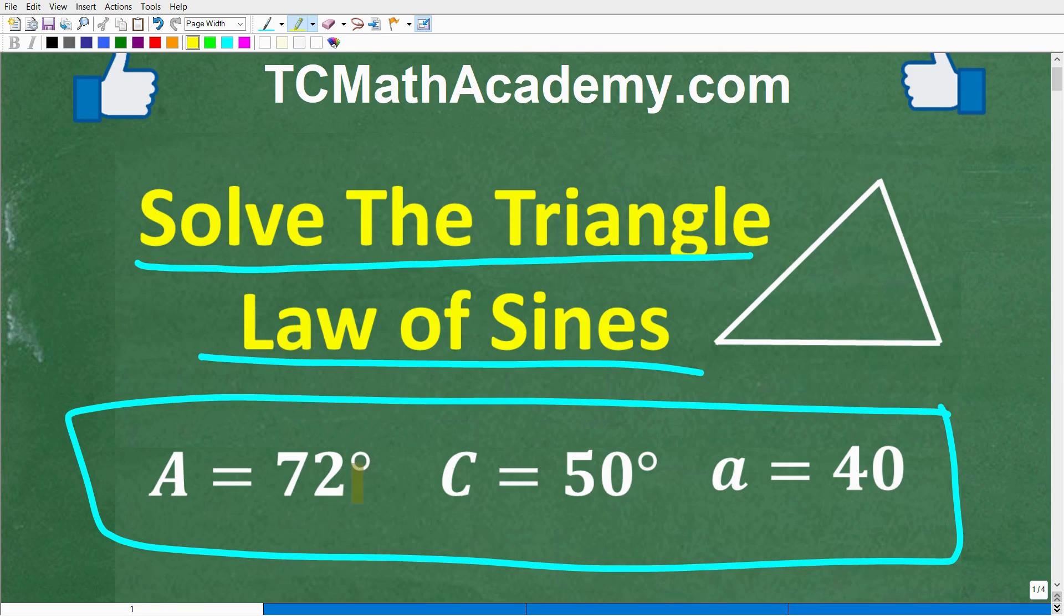So we want to solve this triangle. And we're given that angle A is 72 degrees, angle C is 50 degrees, and side A is 40 units long.